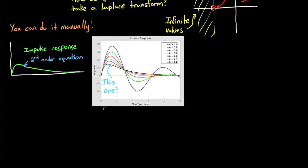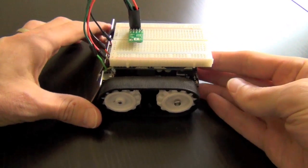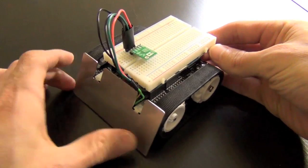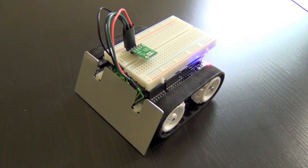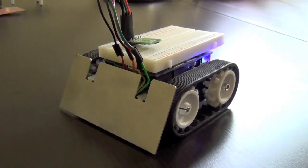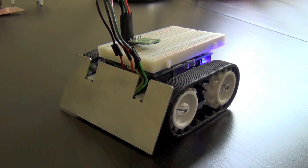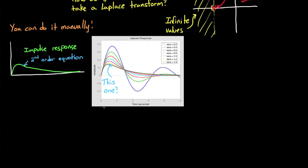So let's measure the impulse response for our car and see what we get. I've loaded some software onto the car that will command 200 PWM counts for one frame. That was it. Did you miss it? I'll play it one more time from a different angle, because it's kind of quick.